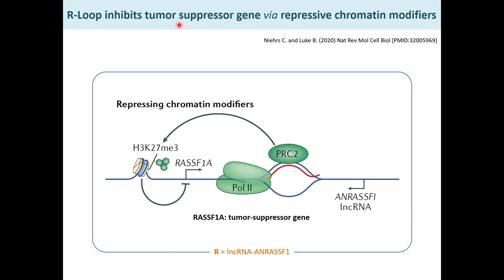Conversely, R-loops can inhibit tumor suppressor genes to cause cancers. For example, NRAS-SF1 is a non-coding lincRNA antisense to tumor suppressor RASSF1 mRNA gene. NRAS-SF1 can generate R-loops that direct repressive chromatin modifier PRC2 to the target RASSF1 mRNA gene promoter, modifying chromatin with the repressive H3K27me3 histone mark, causing chromatin condensation and selectively repressing the expression of tumor suppressor gene RASSF1. NRAS-SF1 and R-loop expression is high in breast cancer and prostate cancer cells compared with lung tumor cells.